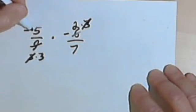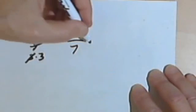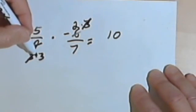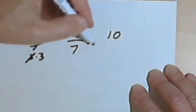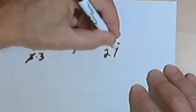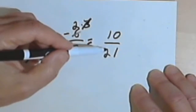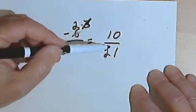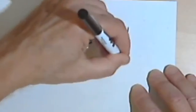So I've got negative 5 times negative 2. Negative times negative is positive, so I've got a positive 10. My denominator is 3 times 7, so that's 21. I can't divide 10 and 21 by any number that's the same. So that's going to be my answer.